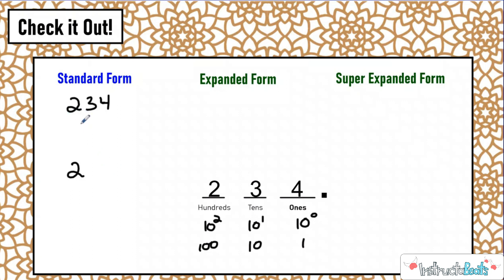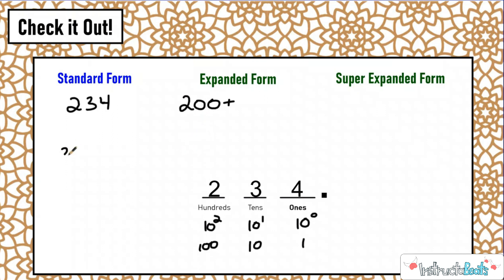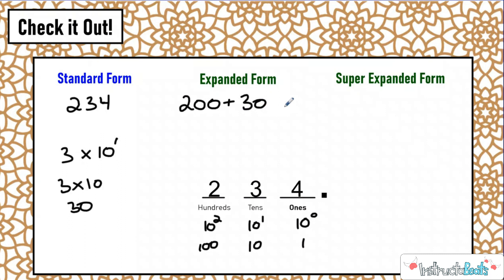Let's start with the two in the hundreds place. Two groups of a factor that's based on the position of the digit — this is in the second position to the left of the ones place, so it's in the hundreds place. We know 10 to the power of two is 100, so the value would be 200. The first digit is contributing 200 to the overall value of the number. The easy shortcut is: it's two in the hundreds place, so you have 200. Now we have a three, multiplied by a factor based on its position — it's one position to the left of the ones place, which is just 10. So three groups of 10 is 30, meaning the three contributes 30 to the overall value.